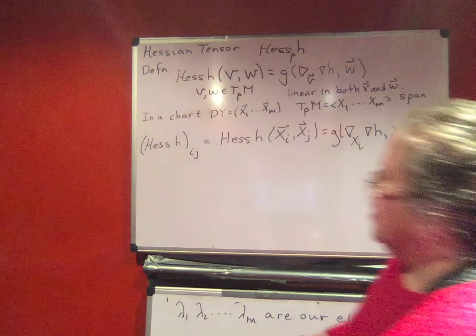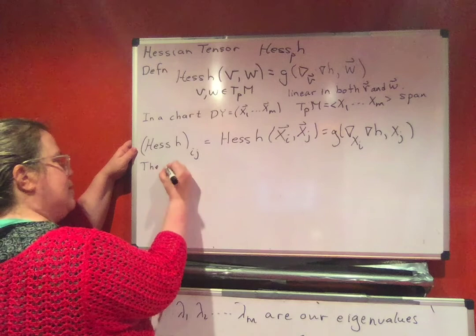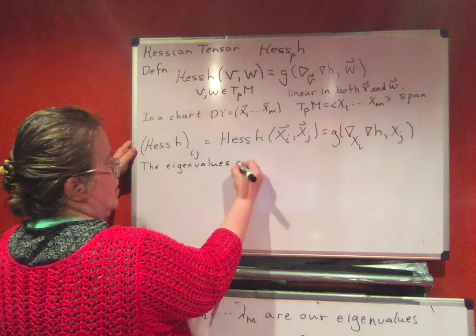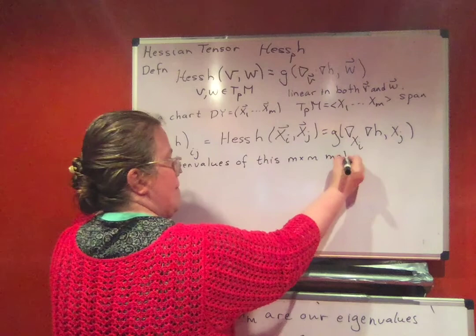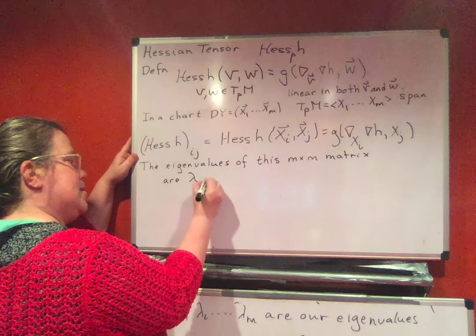So what we have here is our Hessian here, and I want to talk about its eigenvalues, eigenvalues of this matrix. It's an M by M matrix R, lambda_1 up to lambda_M.